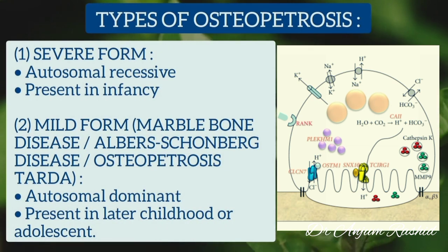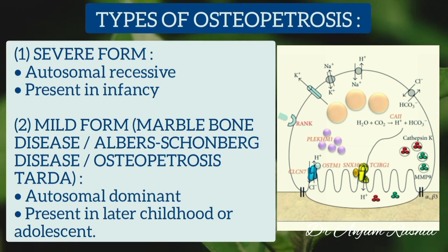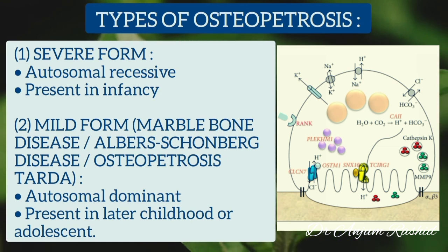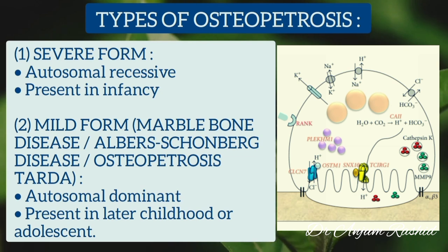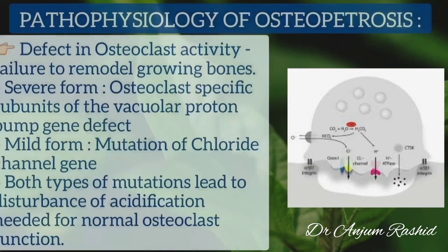Osteopetrosis is of two types: the severe form and the mild form. The severe form is inherited as an autosomal recessive disorder and presents in infancy. The mild form is also known as marble bone disease, Albers-Schönberg disease, or osteopetrosis tarda. It is an autosomal dominant disorder and presents in later childhood or adolescence.